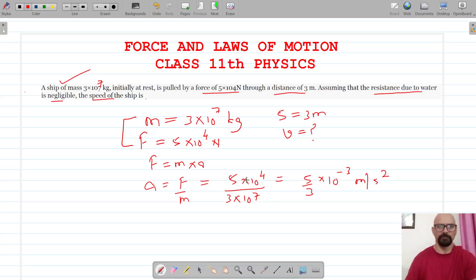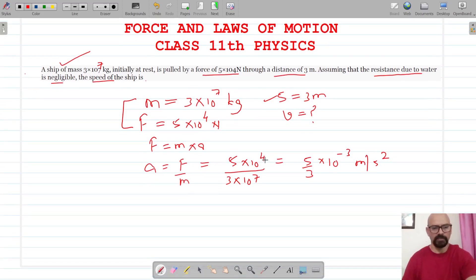Now the distance is given and we have to find the speed of the ship, so let's use another equation of motion: v² - u² = 2as.